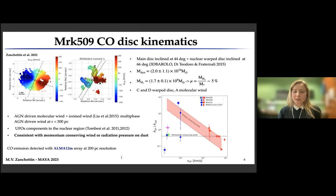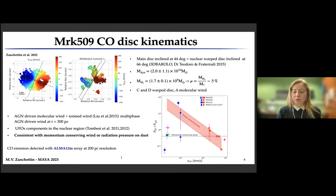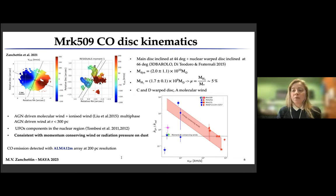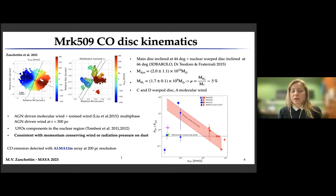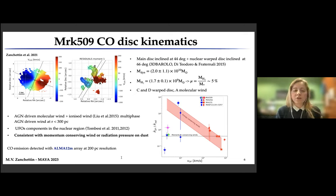For Markarian 509, we analyzed ALMA 12-meter array data in band 6, which trace the CO(2-1) line and the 1.3 millimeter continuum at 200 parsec resolution. We found the presence of a main disk inclined at 44 degrees, plus a nuclear warped disk inclined with respect to the other one, for which we computed the dynamical mass and the molecular gas mass. We also found regions perturbed with respect to disk-like kinematics, which we identified as the AGN molecular wind.